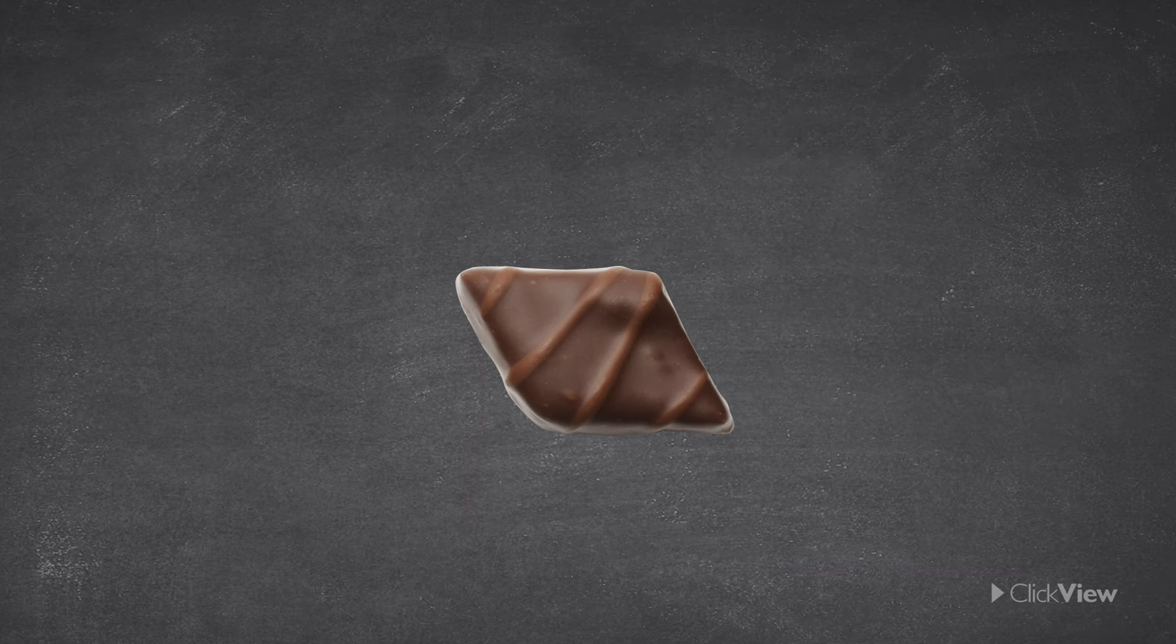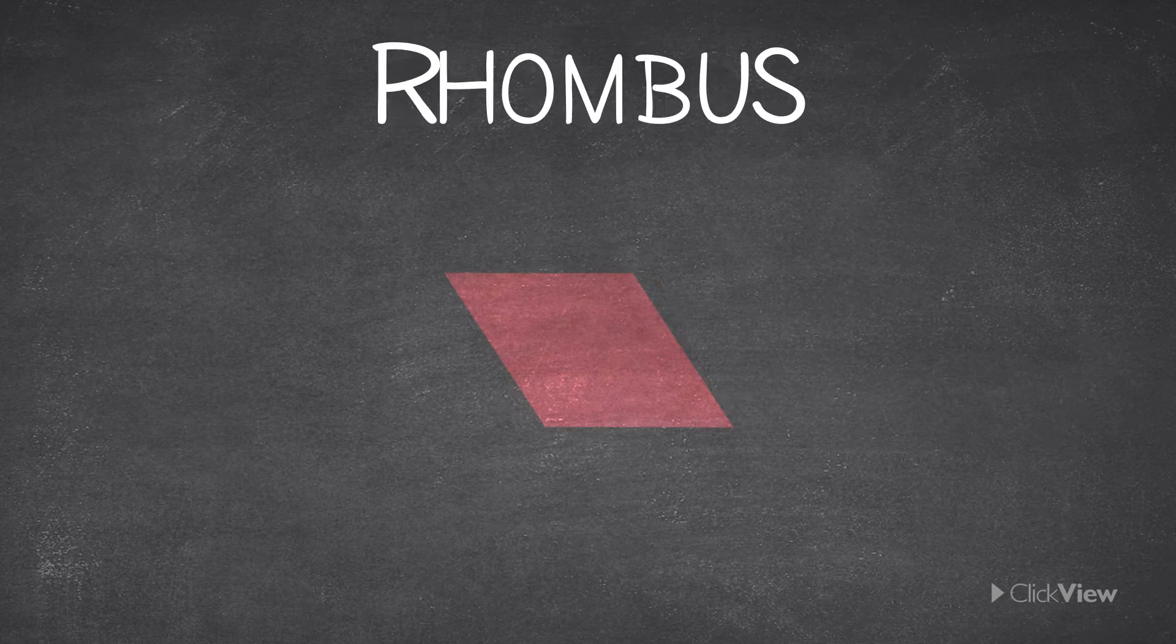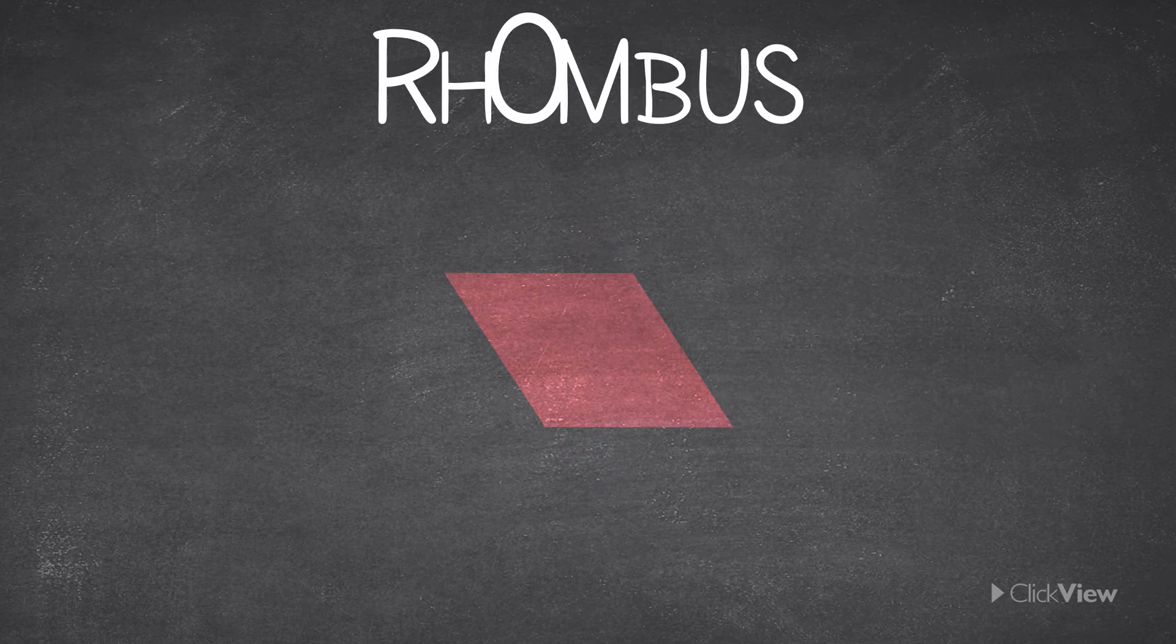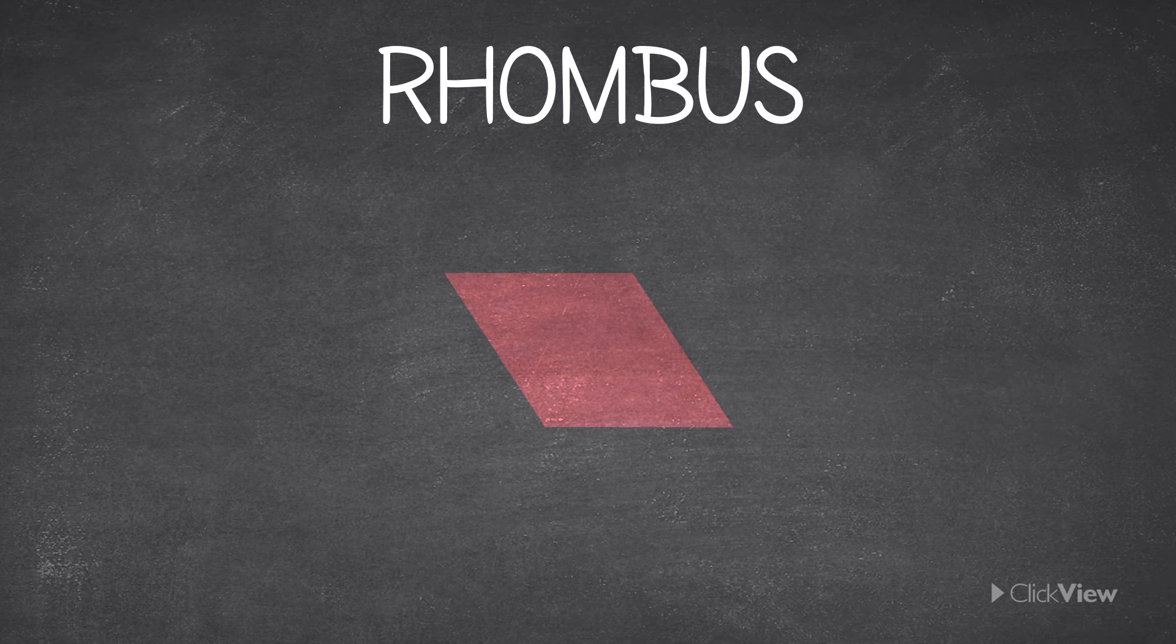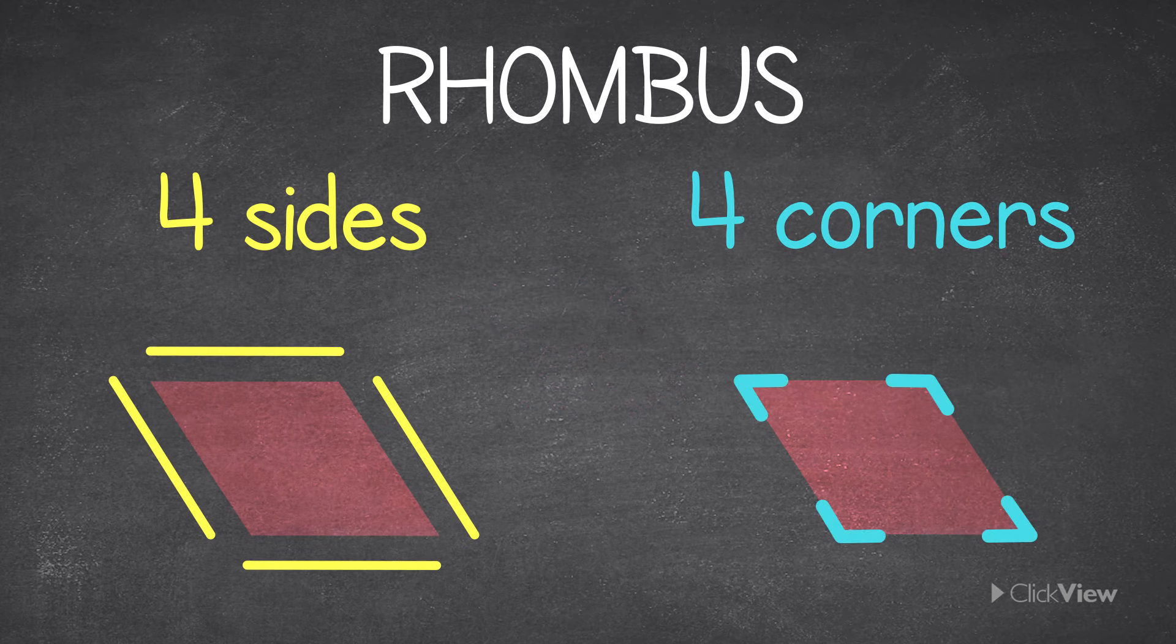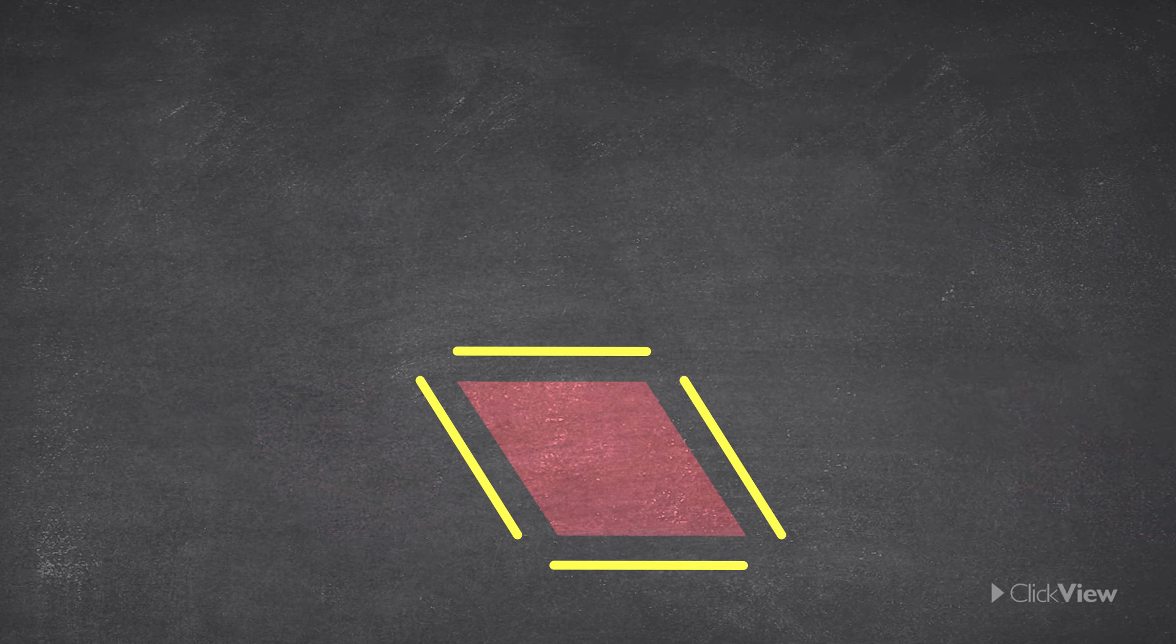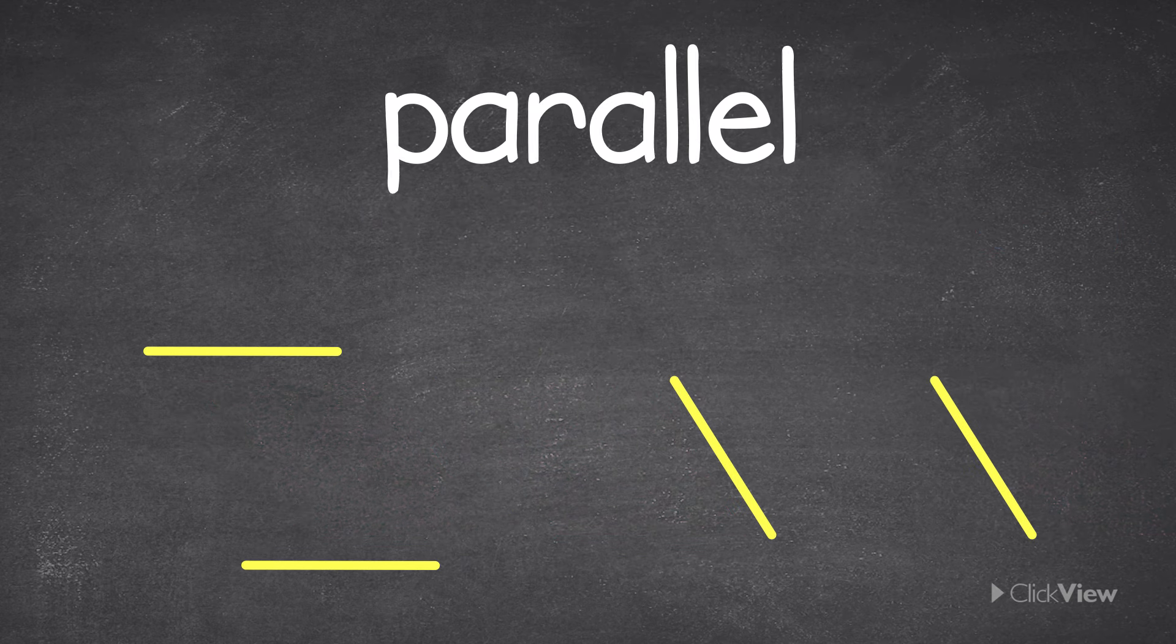This interesting shape is called a rhombus. It can also be called a diamond. A rhombus looks like a square that's leaning to the side. Here are its four sides and its four corners. Each side is the same length. The rhombus has its opposite sides parallel too.